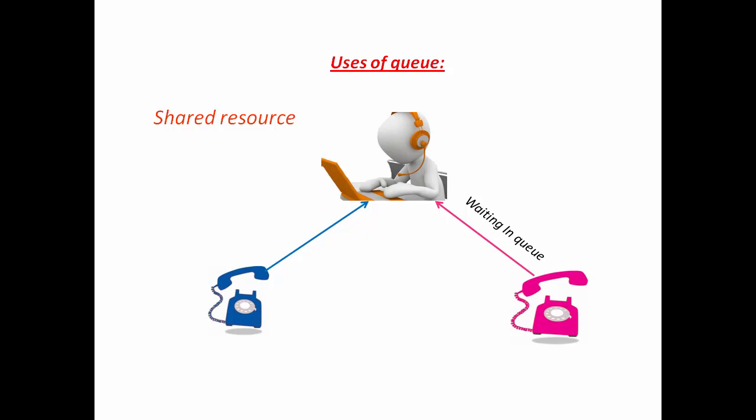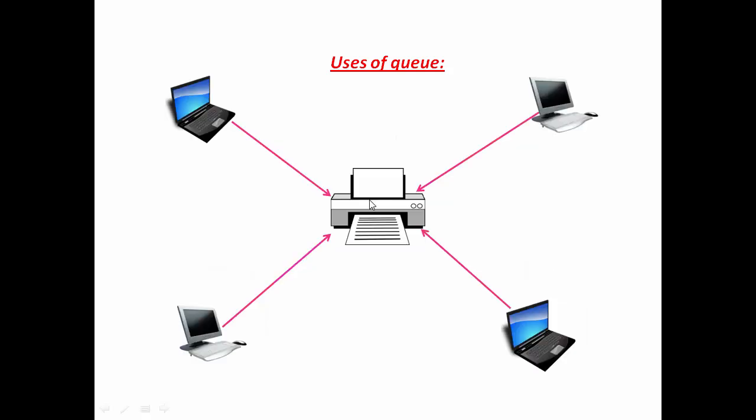Another important example of resource sharing in computer science is a printer. Here this printer is connected to multiple machines and anyone can send print requests. But printer can serve only one print request at a time. So if a printer request comes when it is serving another request, then what happens? In such cases, the program that manages the printer puts the print request in a queue. When printer finishes the current request, it takes the next request from the front of the queue and serves it.